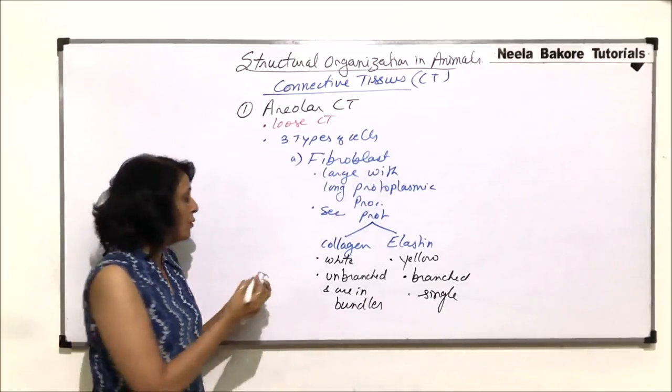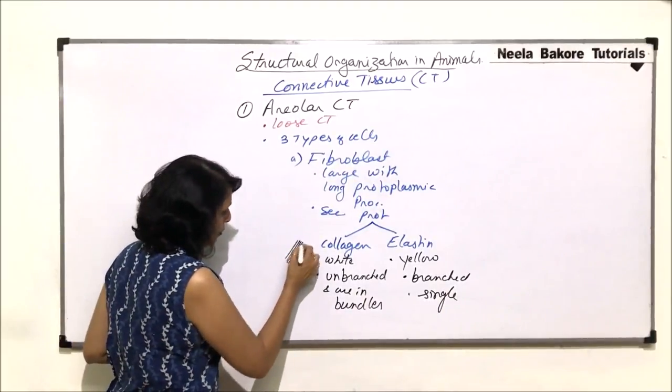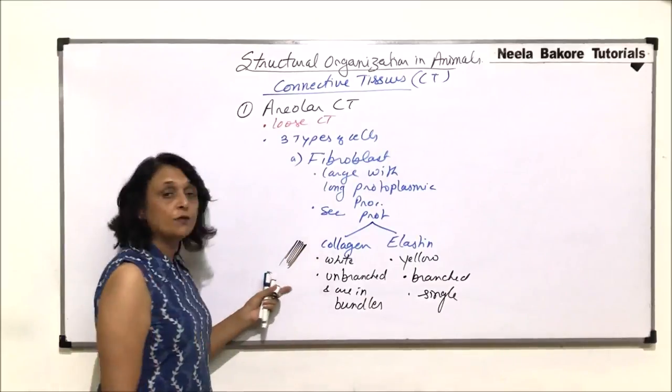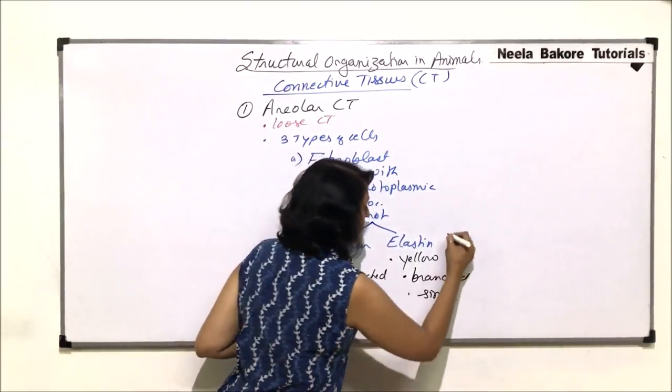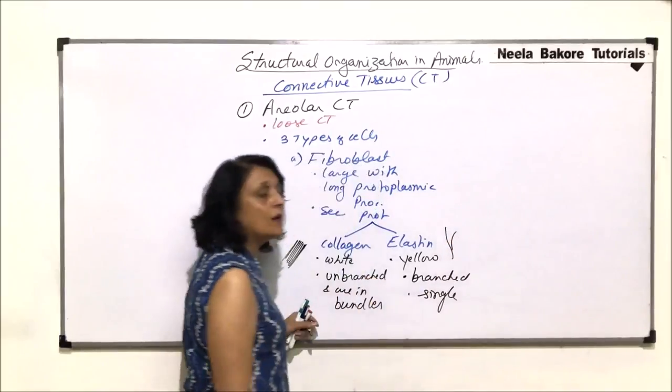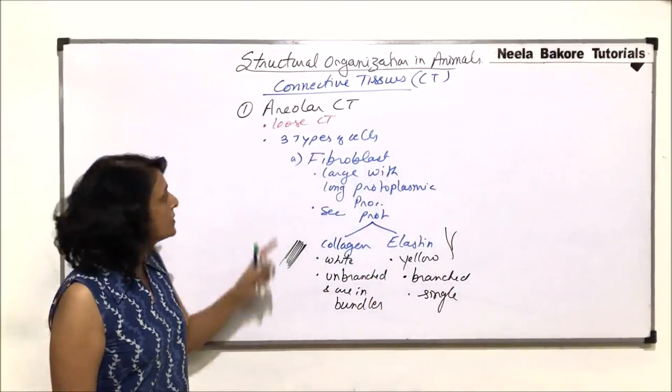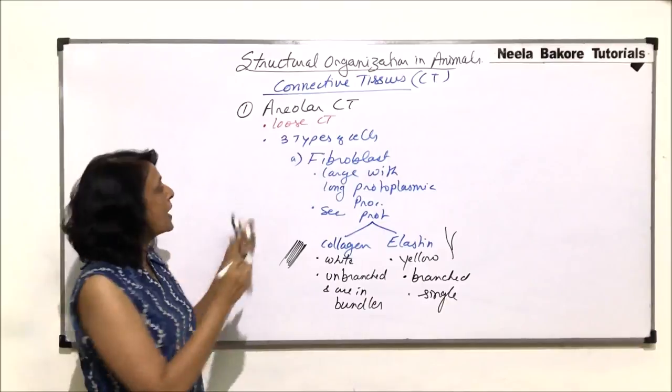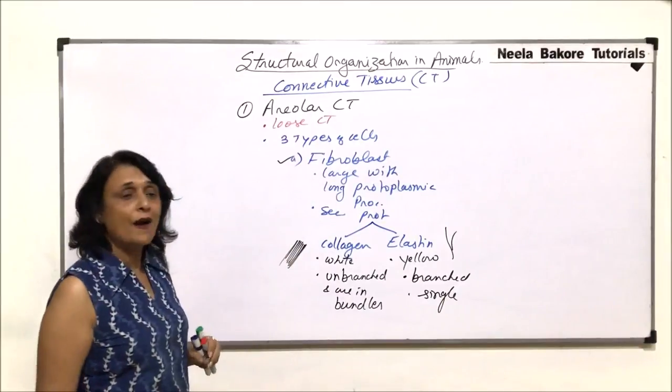That means when we draw collagen fibers, we would draw it like this, unbranched fiber in bundle and when we draw elastin fibers, we draw them single where we show branching. So this is the first type of cell, that is fibroblasts.